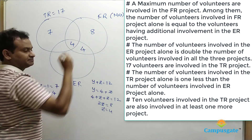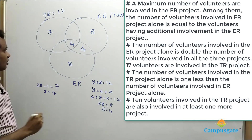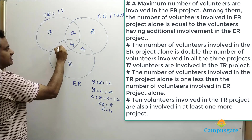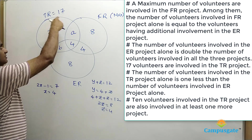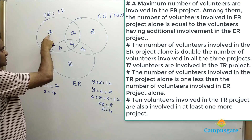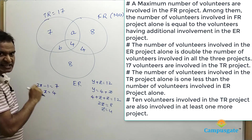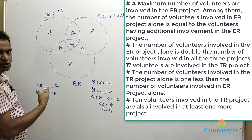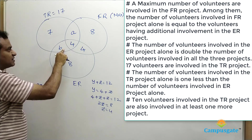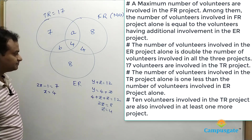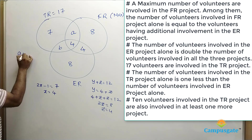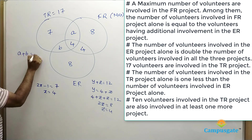Now we are left with only two unknown regions. Let us call the FR∩TR (not ER) region A and the TR∩ER (not FR) region B. We know the total TR circle equals 17, and 7 + 4 = 11, so 11 plus (A + B) must equal 17, meaning A plus B equals 6.